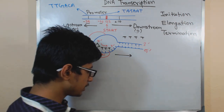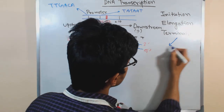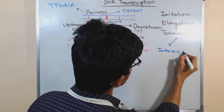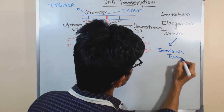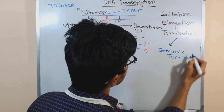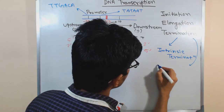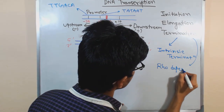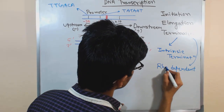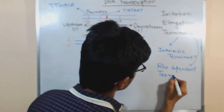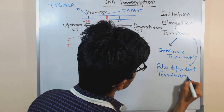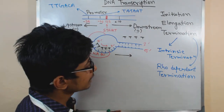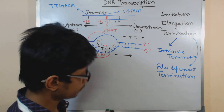One is called intrinsic termination, and another one is called rho-dependent termination. These are the two different types of termination available: intrinsic termination as well as the rho-dependent termination process.